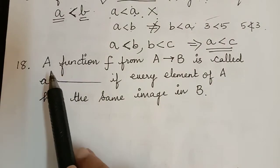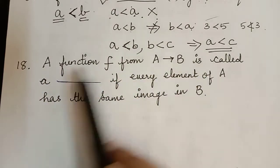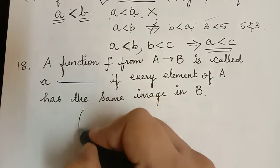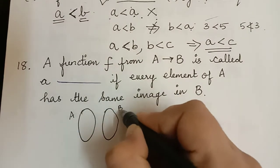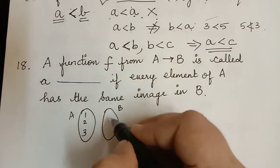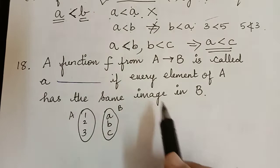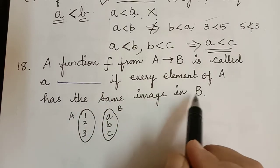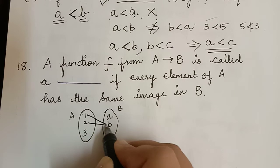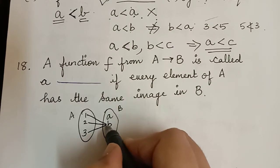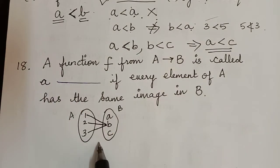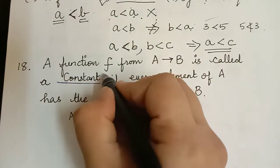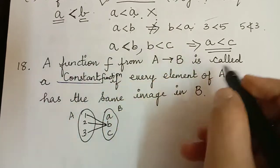The next question: a function F from A to B is called a dash if every element of A has the same image in B. For example, consider two sets A and B, with elements of A being 1, 2, 3 and elements of B being A, B, C. If every element of A has the same image in B — for example, if they all map to the same image — then that function is known as a constant function.